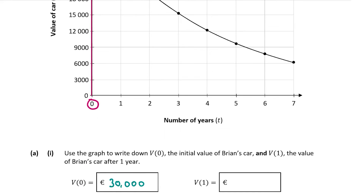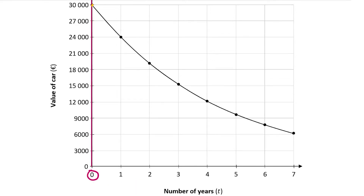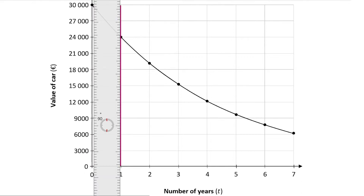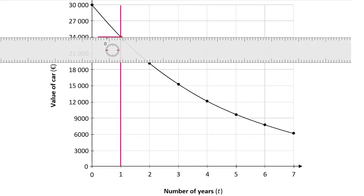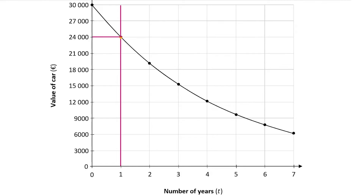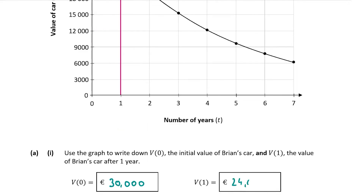Now let's find V1, the value of Brian's car after one year. This is where t equals one. We can see the graph hits the line x equals one at a point, and the corresponding value on the y-axis is €24,000. So the value of Brian's car after the first year is €24,000. That's our answer for A part 1, worth 5 marks.